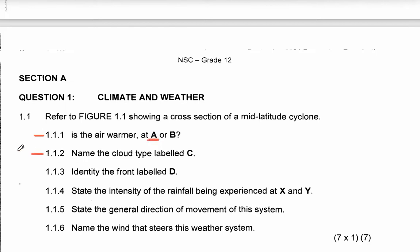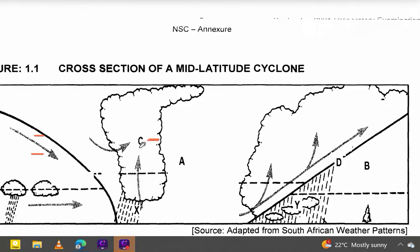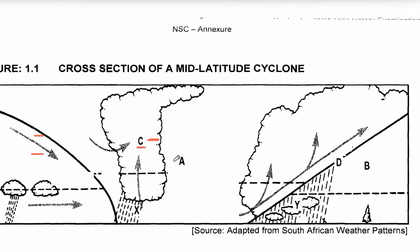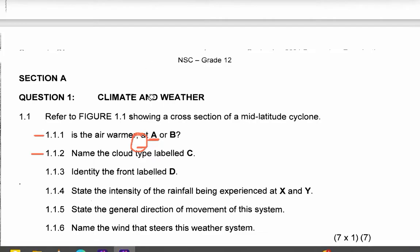Let's move to 1.1.2. It says name the cloud type labelled C. You can clearly see the shape — this is a cumulonimbus cloud. It is associated with the cold section and goes with the cold front. You know the cold front conditions from our lesson on mid-latitude cyclones. So the cloud type C is cumulonimbus clouds.